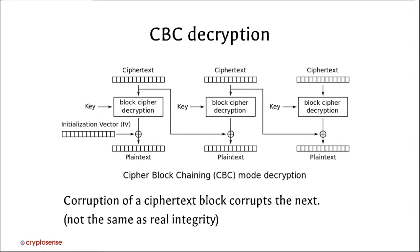CBC decryption works as expected: take the first block of ciphertext, run it through the decryption function, and XOR it against the IV — that's why the decryptor needs the IV. The XOR operations cancel out and you recover the plaintext. If an attacker tampers with a ciphertext block, that corrupts the next block of plaintext too, since it changes the value used as the IV for that block. In practice though, this doesn't give very good integrity protection, and we'll talk later about how this property can actually be dangerous.